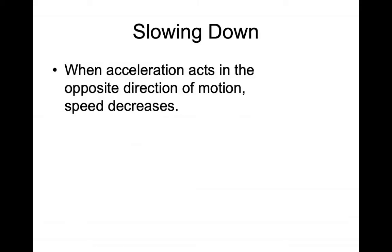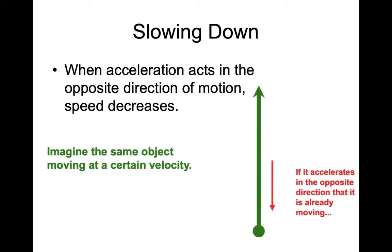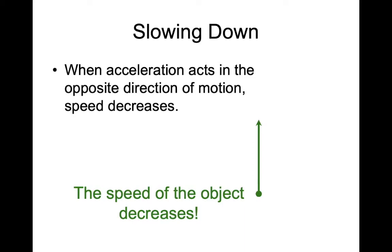Let's consider the next case of slowing down. When acceleration acts in an opposite direction of motion, speed will decrease. So you're still in that car on the highway, moving at some certain velocity, but now we're going to accelerate in the opposite direction. Well, that's just like tapping the brakes or pressing on the brakes of the vehicle. It reduces the speed of the car like so. You can see here the vector got smaller to indicate that the vehicle is now moving slower.